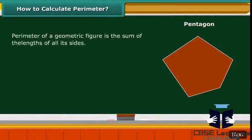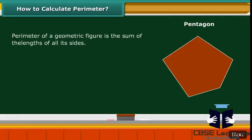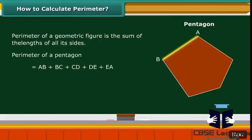We have seen that the perimeter of a geometric figure is the sum of the lengths of its sides. A pentagon is a closed geometric figure of five sides. Suppose the lengths of the five sides AB, BC, CD, DE, and EA are AB as 4 centimeters,